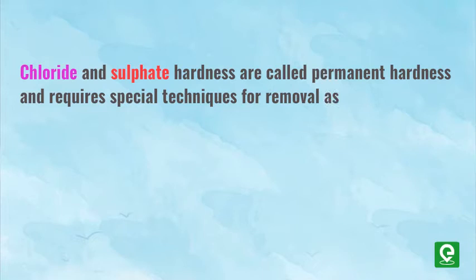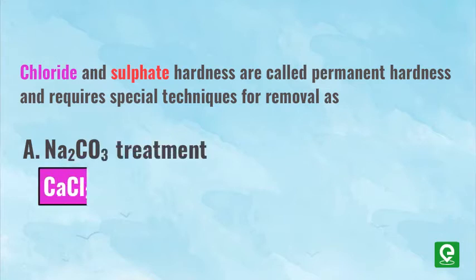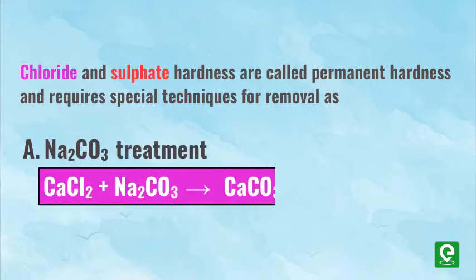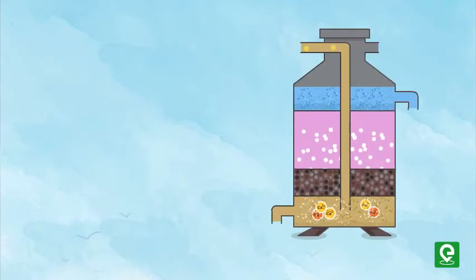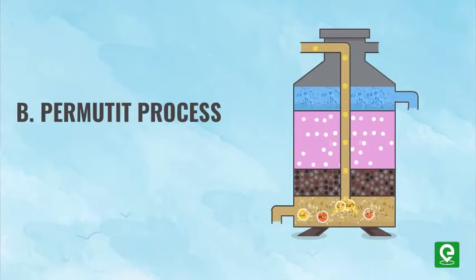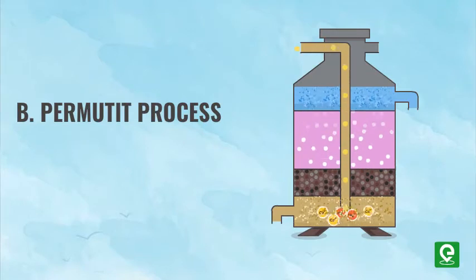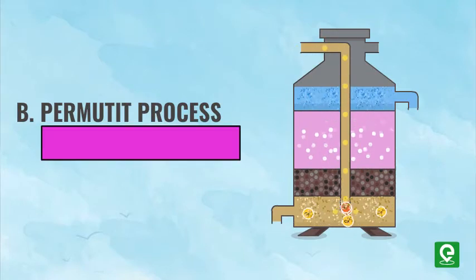One method is sodium carbonate (Na₂CO₃) treatment. Treatment of hard water with sodium carbonate removes both temporary and permanent hardness. Another method is the Permutit process. The chemical formula for Permutit is Na₂Al₂Si₂O₈·xH₂O.